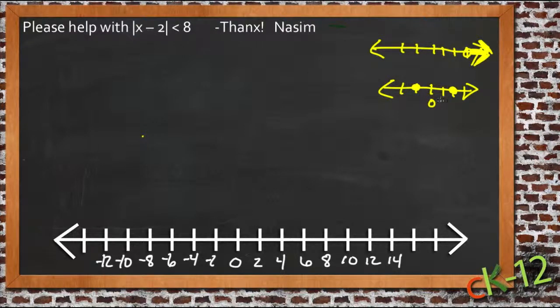An absolute value inequality combines the two. We have a number graphed somewhere, and then everything shaded in one direction from it, and another number graphed somewhere else, and everything shaded in another direction from it.